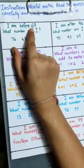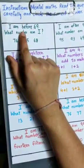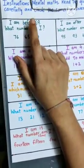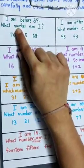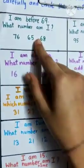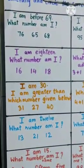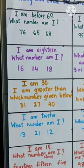I am before 69. What number am I? It means, I am before 69. So, which number am I? Which number comes before 69?